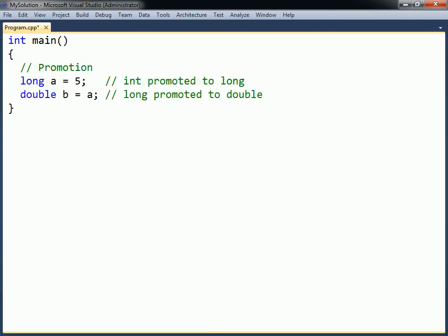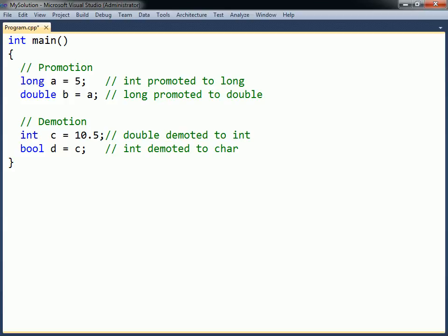Promotion occurs when an expression gets implicitly converted into a larger type, and demotion occurs when converting an expression to a smaller type. Because a demotion can result in the loss of information, these conversions will generate a warning on most compilers.